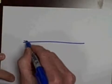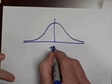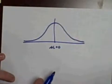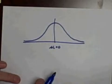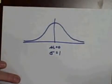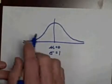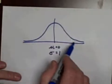Let's continue our discussion of clocks and the standard normal distribution. Our clocks have a mean of zero seconds off and a standard deviation of one second. If that's true, here's the shape — it's a standard normal distribution.